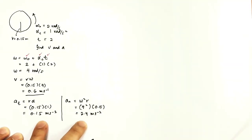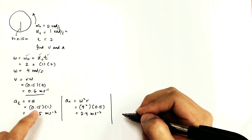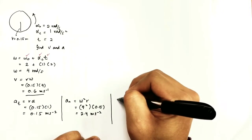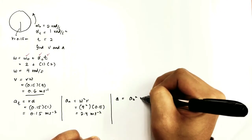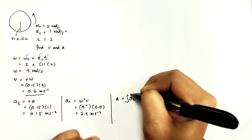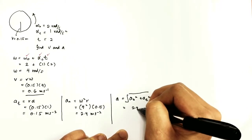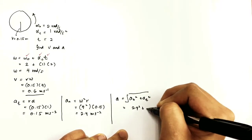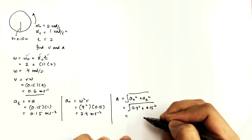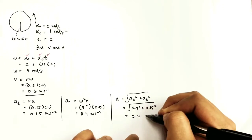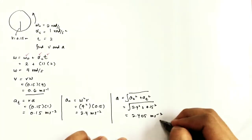So we have these two components — tangential and normal. Our final acceleration is A equals the square root of aN squared plus aT squared. What we get is the square root of 2.4 squared plus 0.15 squared, which gives us 2.405 meter per second squared. This is the answer.